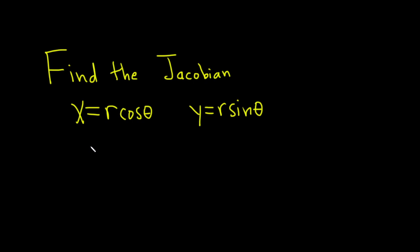So all we have to use in this problem is the definition of the Jacobian. The Jacobian of x and y with respect to r and theta is given by the following formula: del xy del r theta.